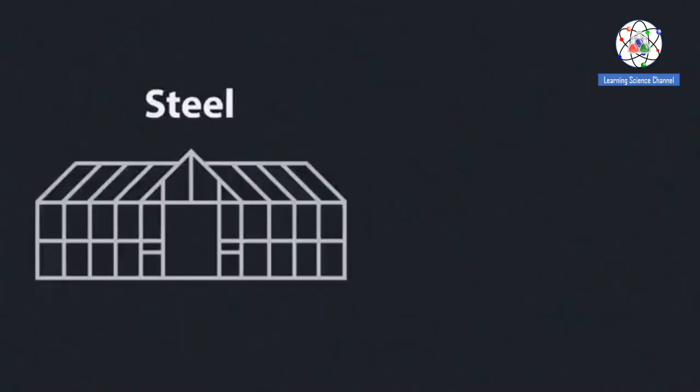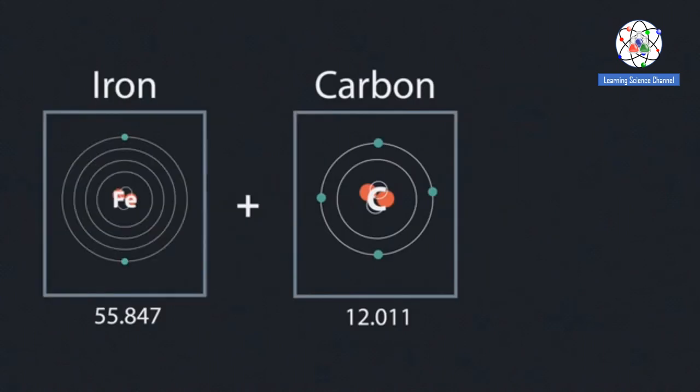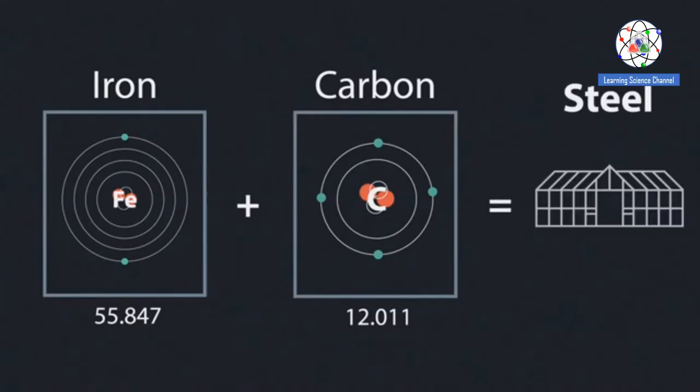Steel is another metal which has changed the face of the earth and the way humans use the materials around them. Steel is also strong, but perhaps more importantly, it is cheap to make. Iron, when combined with carbon, becomes the compound steel.